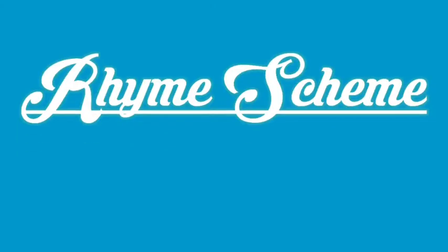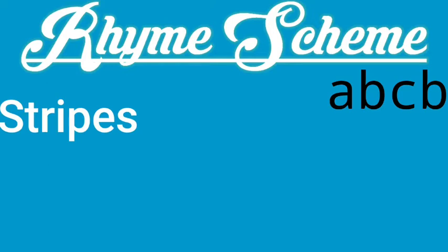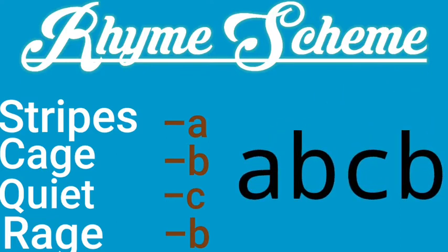Now let's see the rhyme scheme of this stanza. This whole poem is written in the rhyme scheme A, B, C, B. Looking at the last words of each line: stripes (A), cage (B), quiet (C), rage (B) — rage is rhyming with cage, so we mark it B. So the rhyme scheme is A, B, C, B, and all stanzas are written in the same pattern.